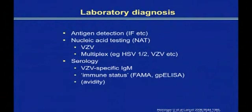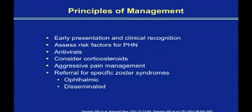The treatment of herpes zoster: the main thing is to accelerate the healing of zoster lesions, but to limit the duration and severity of acute and chronic pain is our major concern. The key issue is very definitely early presentation and clinical recognition. Assess the risk factors for post-herpetic neuralgia, use antivirals, consider corticosteroids, aggressive pain management, and perhaps referral to an ophthalmologist.